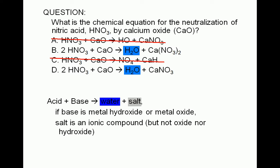The water comes from the combination of hydrogen ions of the acid with the oxide ions from the base. To figure out the salt, we simply combine the cation from the base, in this case calcium, with the anion from the acid, in this case nitrate.